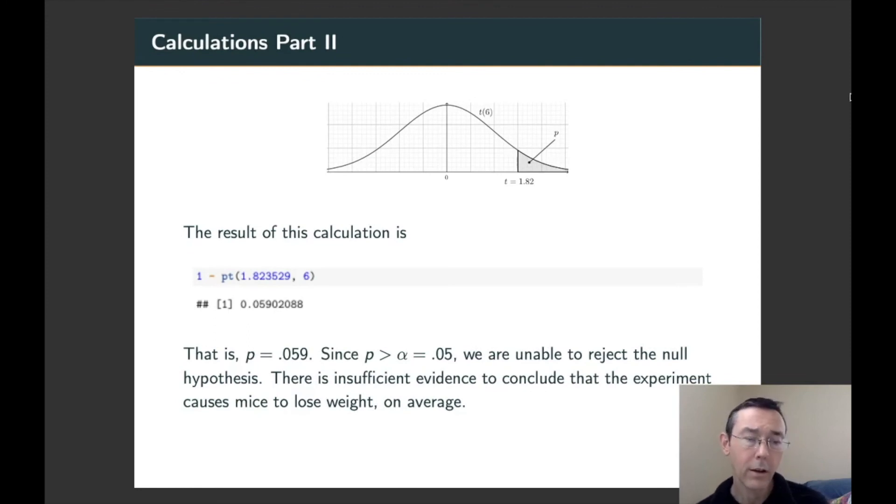And I put that into R and I get 0.059. That's the p-value of the test. Since p is greater than the alpha that we set at the beginning, 0.05, we are unable to reject the null hypothesis. There's insufficient evidence to conclude that the experiment causes mice to lose weight on average. As usual, we recognize this does not mean the null hypothesis is true. We just don't have powerful enough evidence yet to reject it.